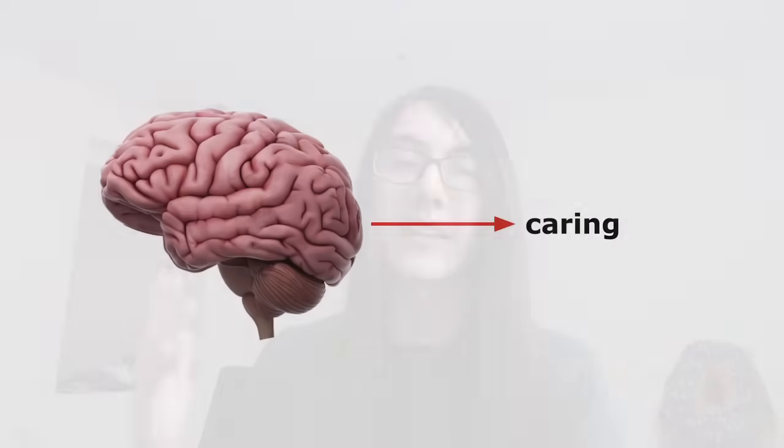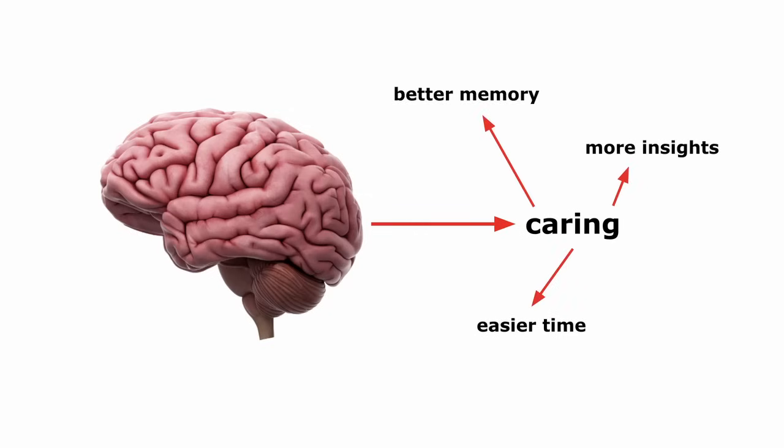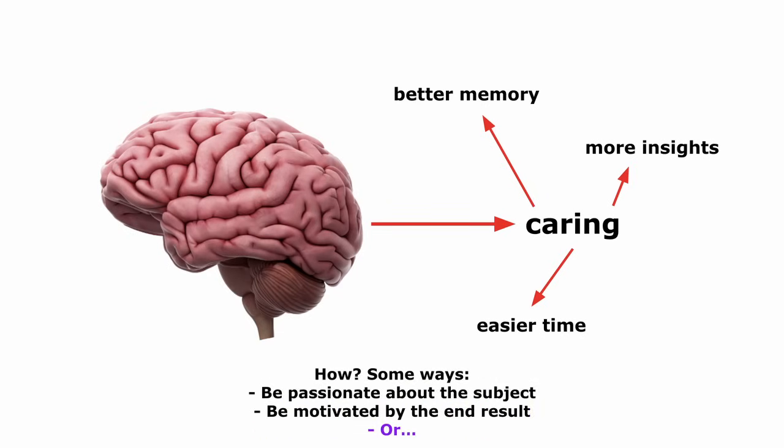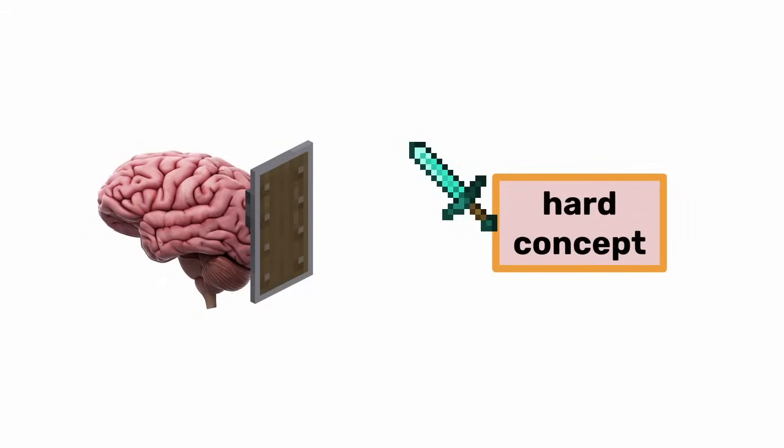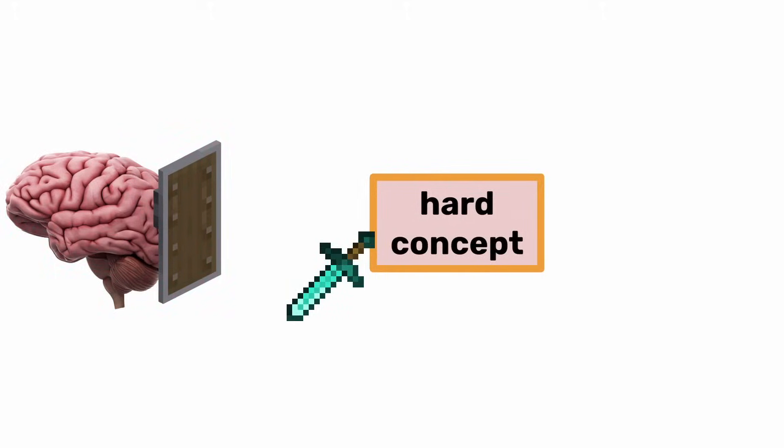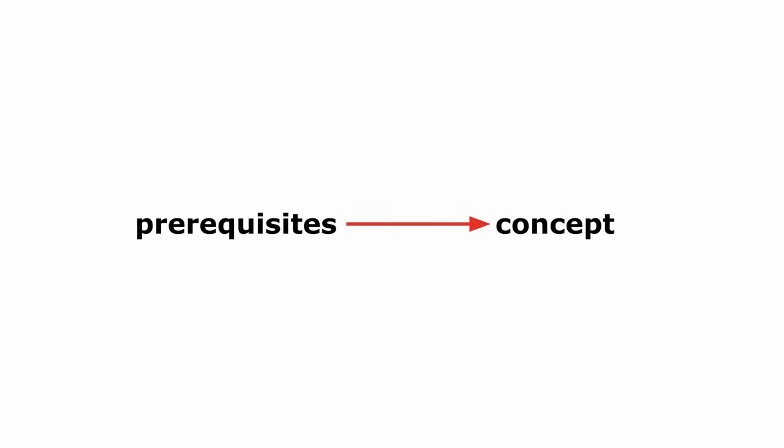So let's start by talking about caring, because caring is very nice. It means you remember for longer, it means your brain will be able to come up with more insights, and it means you just generally have an easier time learning. So how do you care? And the easiest way is just to be passionate about the subject. And if you aren't passionate about the subject, you can be motivated by the end result, like a job or prestige. But if you don't even have that, there are other ways too. For example, if not being able to understand this concept doesn't bother you, well, why not? It should, because you don't understand it. How can you allow this tiny little speck of information to make a fool out of you?